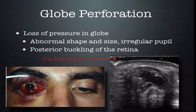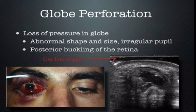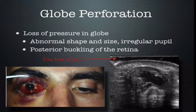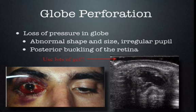Globe perforation is something we all worry about when a patient has a history of trauma or was hammering metal. Generally, a large rupture of the globe will lead to loss of volume in the vitreous — you'll have an abnormal shape and size, an irregular pupil, and the globe will not have its normal shape on ultrasound. There may be buckling of the retina because the vitreous is not there to maintain shape. Make sure to use lots of gel to avoid putting extra pressure on the globe. For very small penetrations, the eye might look perfectly normal except for the foreign body. Foreign bodies can be very difficult to detect if they're not in the vitreous.